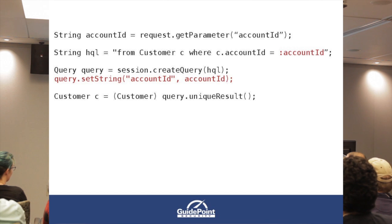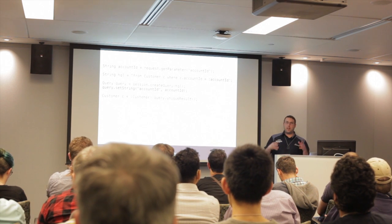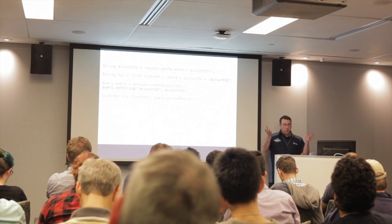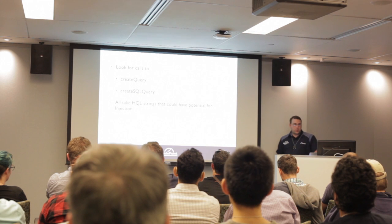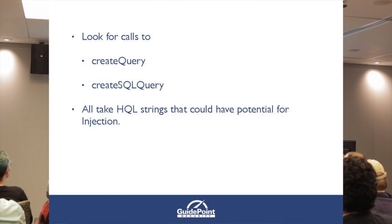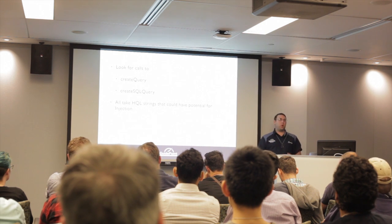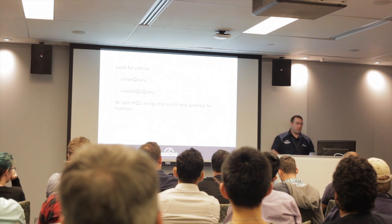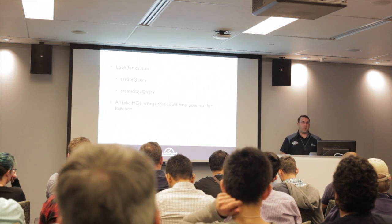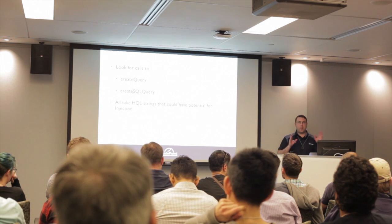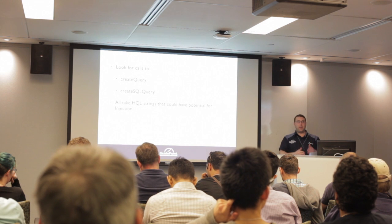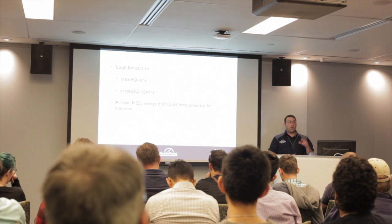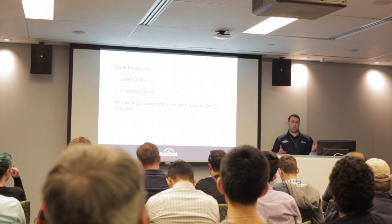HQL is not the only query method Hibernate supports — it also has the Criteria API, which is more object-oriented and very Entity Data Framework-like in construction, and it doesn't even use HQL. For source code review, I want to look for any calls to createQuery or createSQLQuery that build raw HQL strings — those are potentially vulnerable. You need to find where that HQL string comes from and whether there's any user-controllable data in it. Also watch for @NativeQuery annotations, because that lets Hibernate pass straight native SQL directly through to the database.